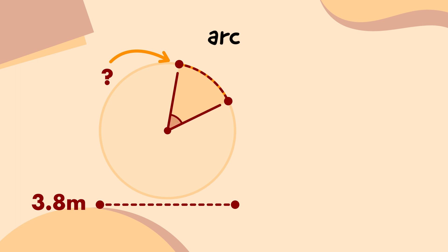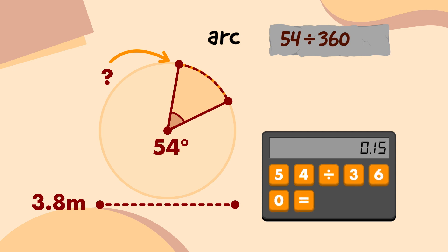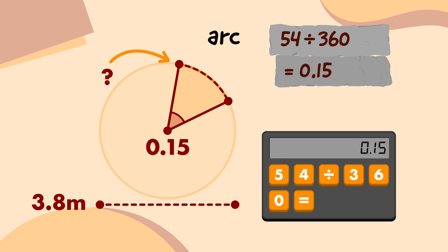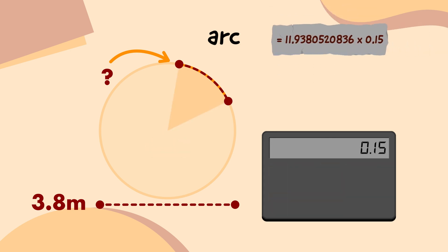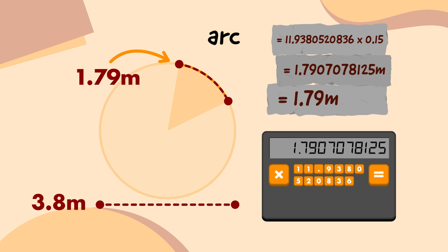My measuring staff tells me that the central angle of this bit is 54 degrees. So I'll divide 54 by 360. On my calculator, I'm going to type 54, press the divide button, type 360, and press the equals button, which tells me that this part of the circle is 0.15 times as big as the whole circle. Then I'm going to multiply that by the circumference, which gives me 1.7907078125. That means this arc of the emblem circle is 1.79 metres long.